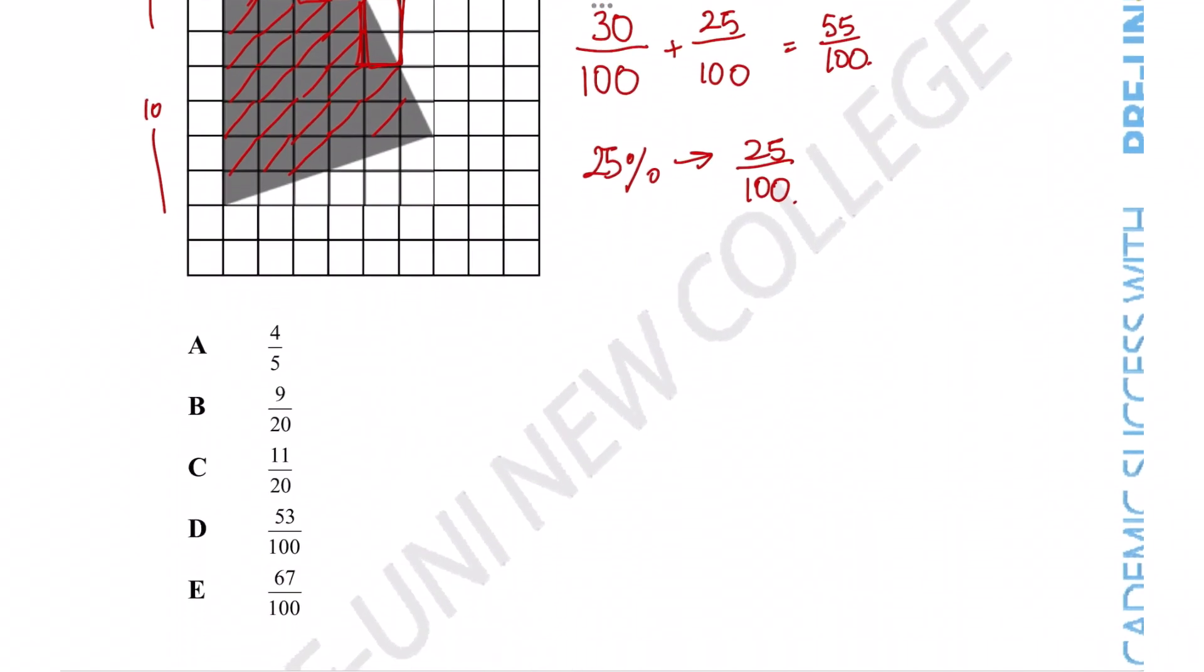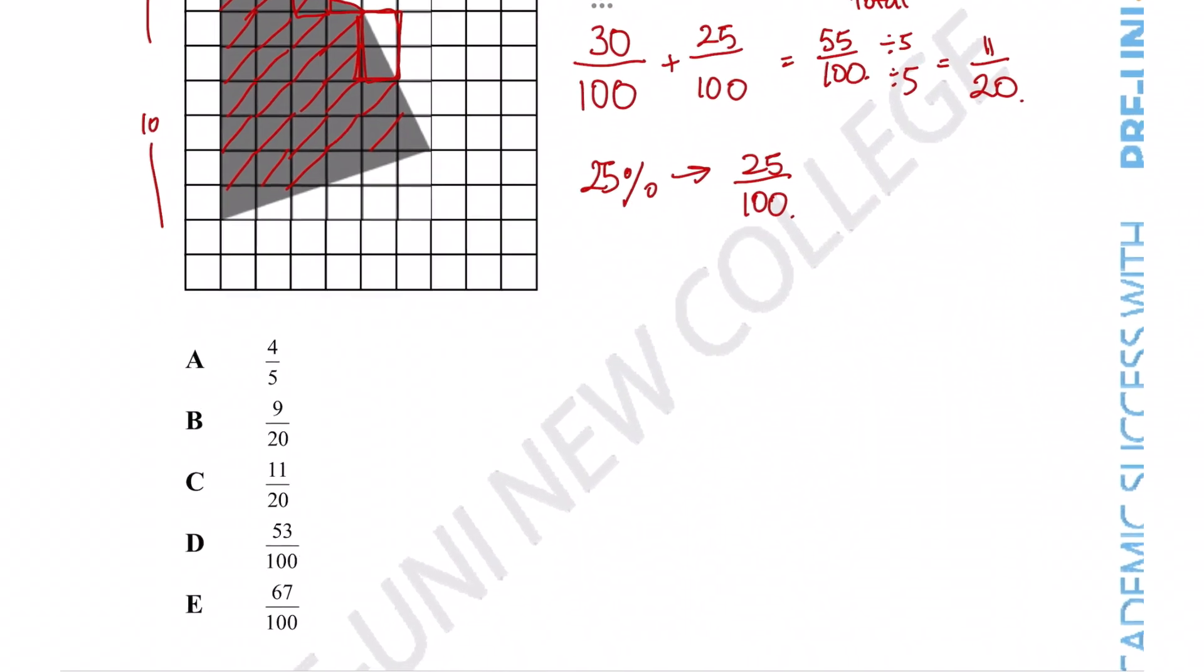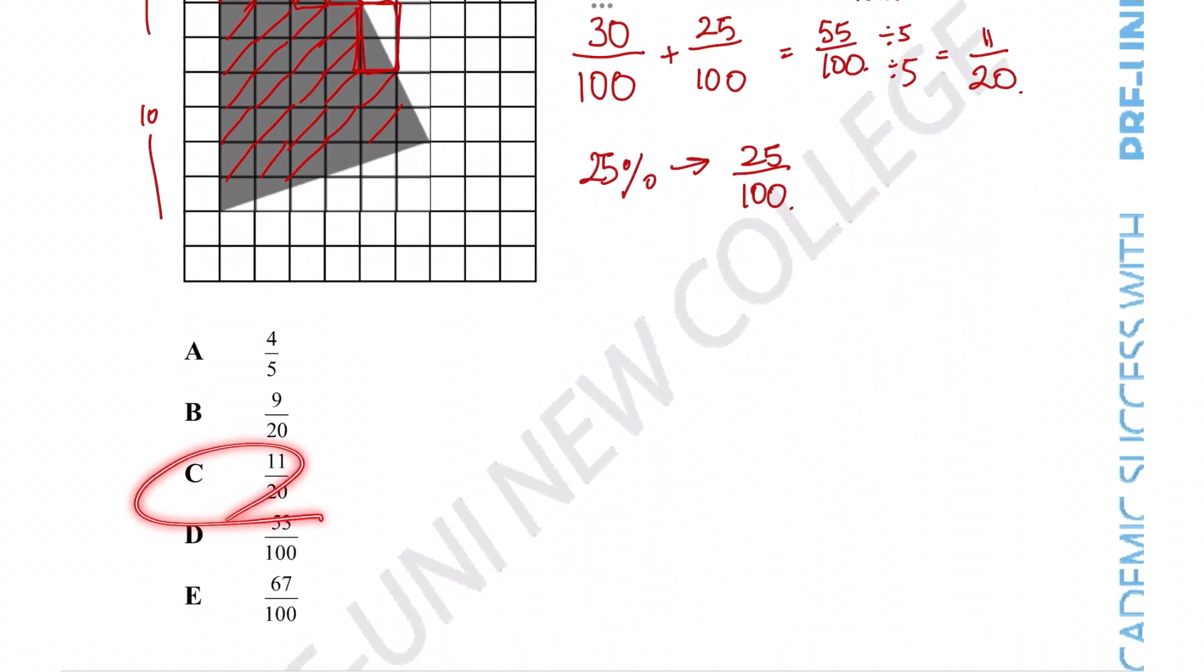Now, if we take a look at the answer options, that's not one of the available answer options. So that would be because this is clearly a simplifiable fraction. Both of these numbers are divisible by the number 5. So what we need to do is divide the numerator and denominator by the number 5, which should give us 11 over 20 as the actual answer. And thankfully, that is an answer option that we can see. So that is going to be the final solution.